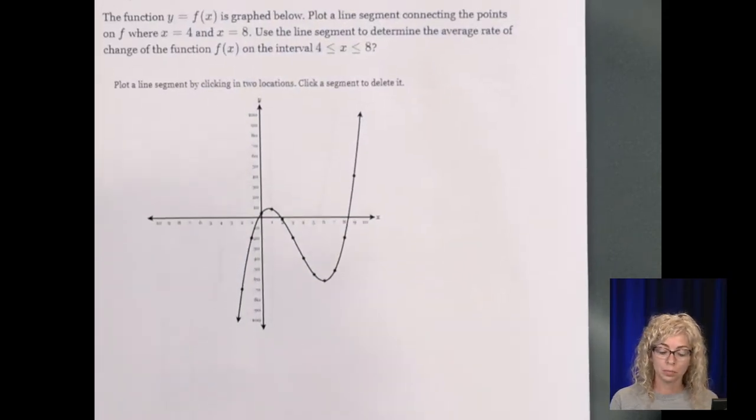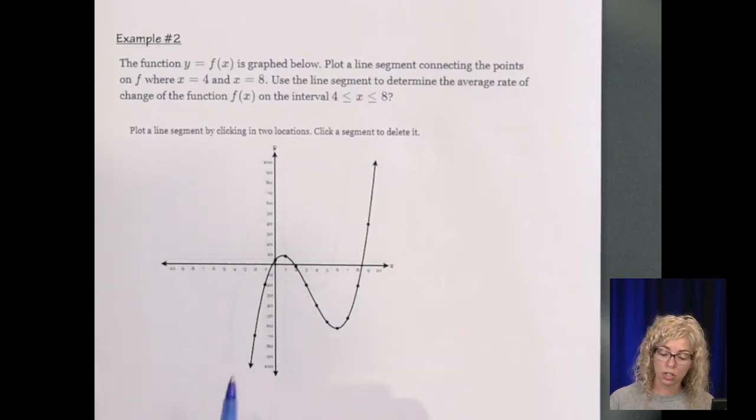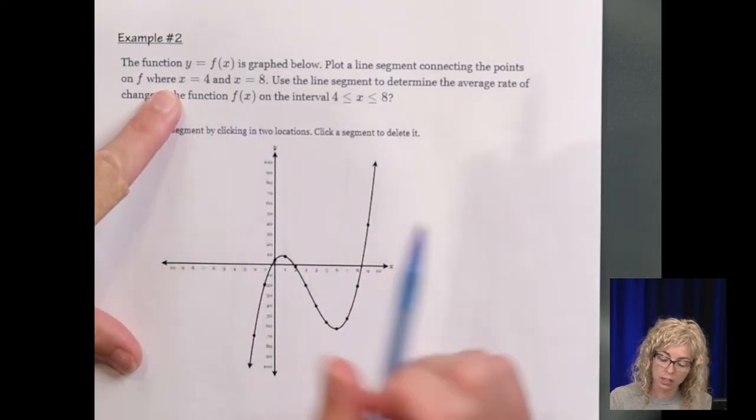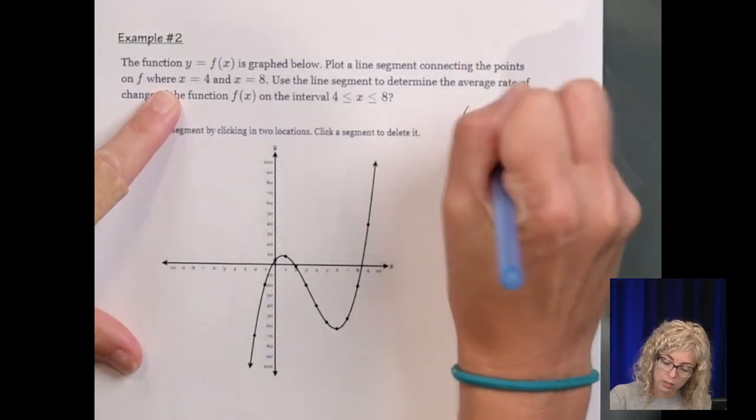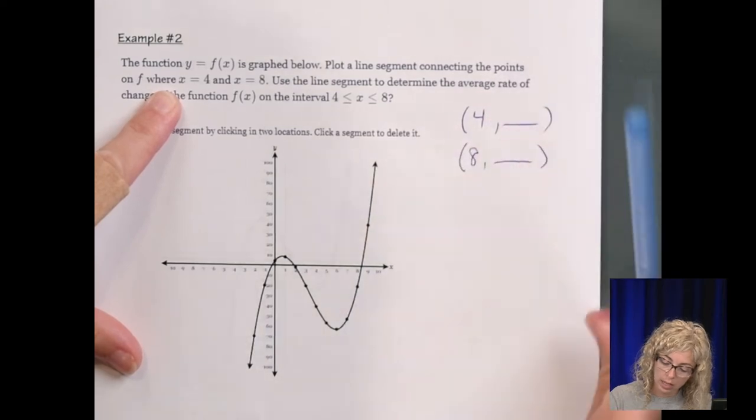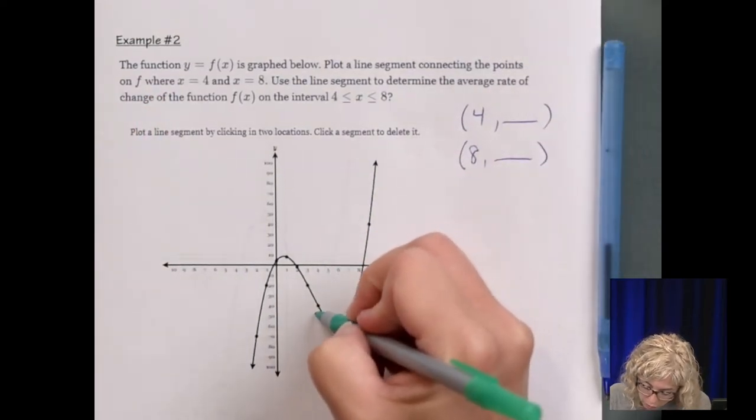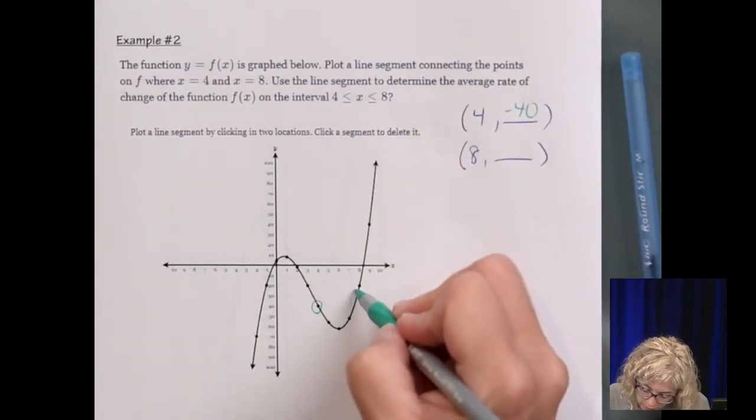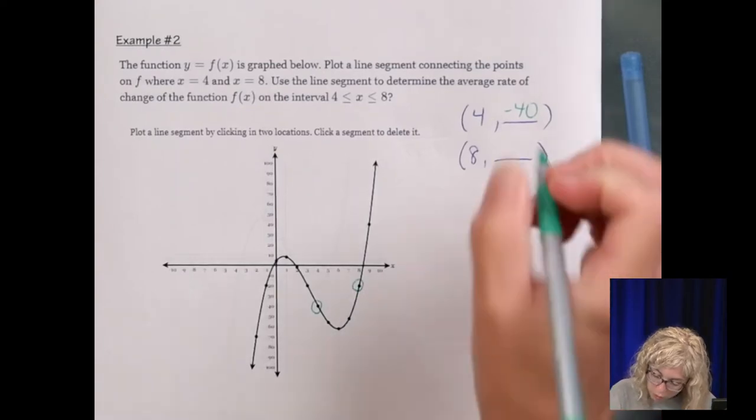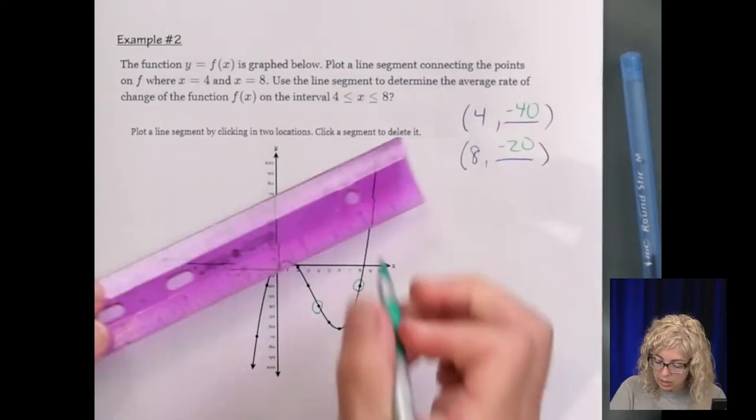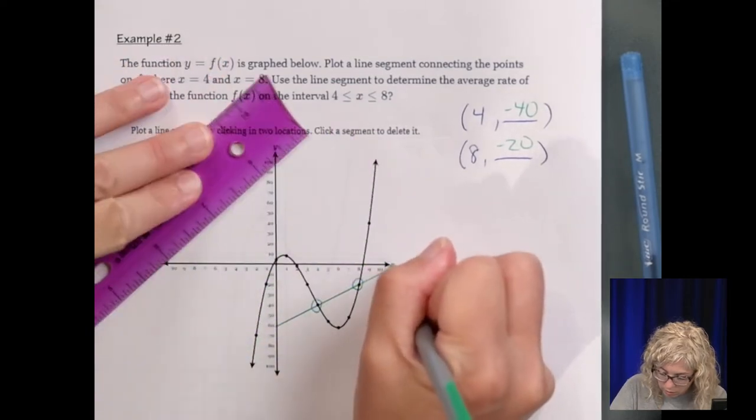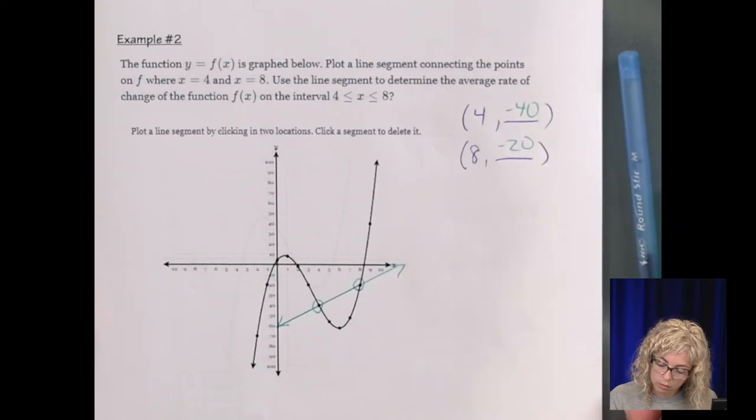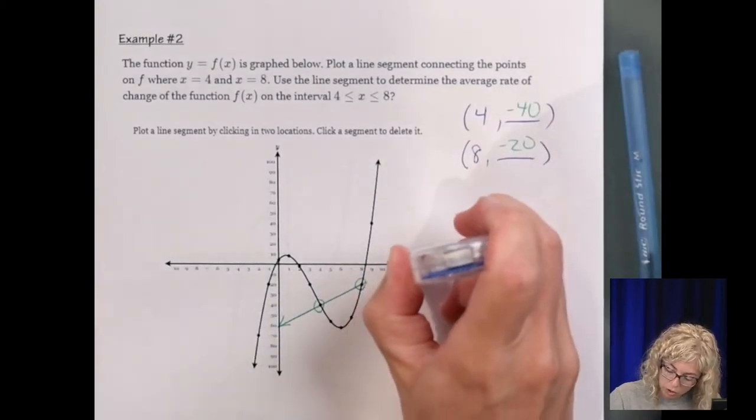Okay, number 2. Here's the function, standard function graph. Plot a line connecting the two points where x is 4 and x is 8. So the two points where x is 4 and x is 8, let's find those first. That's 4, negative 40 and 8, negative 20. It says plot a line connecting those two points. Use a line, line segment, oh, a line segment.